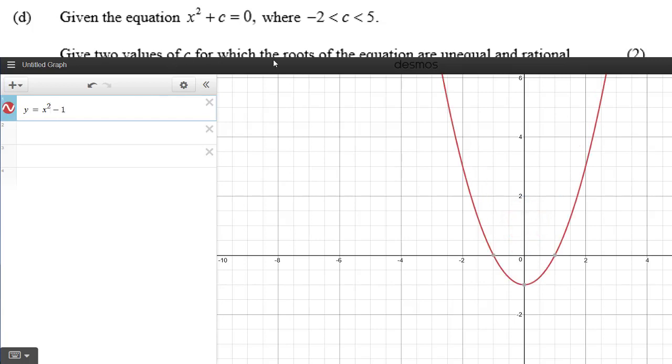Now for these roots, the roots to be real, we will need c to be less than 0. So in fact, it's not going to be from minus 2 to 5, it's going to be from minus 2 to 0. That c must give us real, unequal, rational roots.